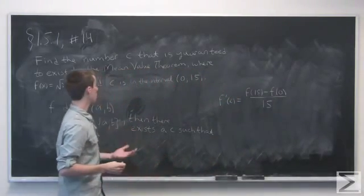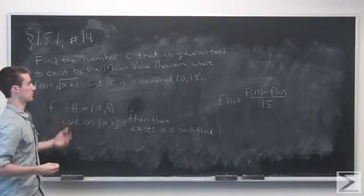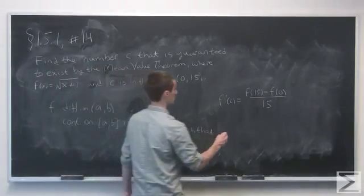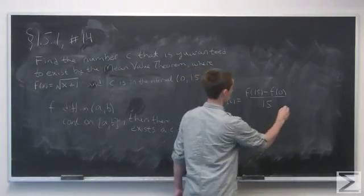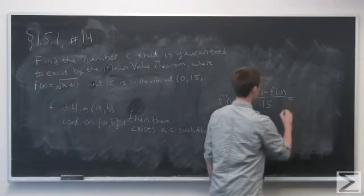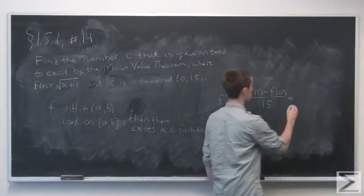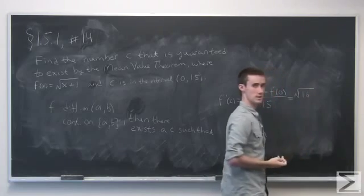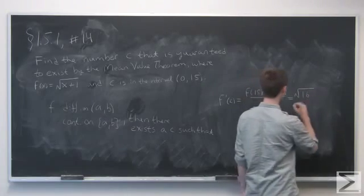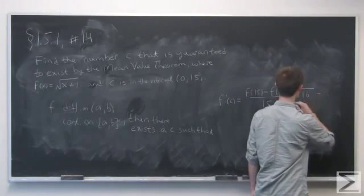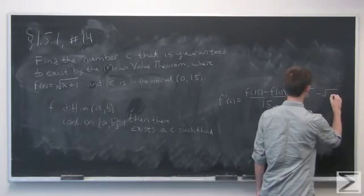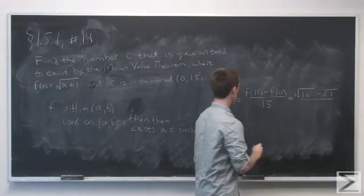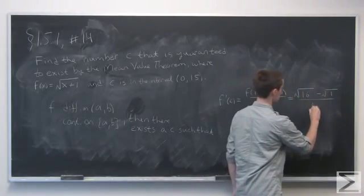Our function f is f of x equals the square root of x plus 1. So we simplify: we end up with the square root of 15 plus 1, or 16, minus the square root of 0 plus 1, or the square root of 1, over 15.